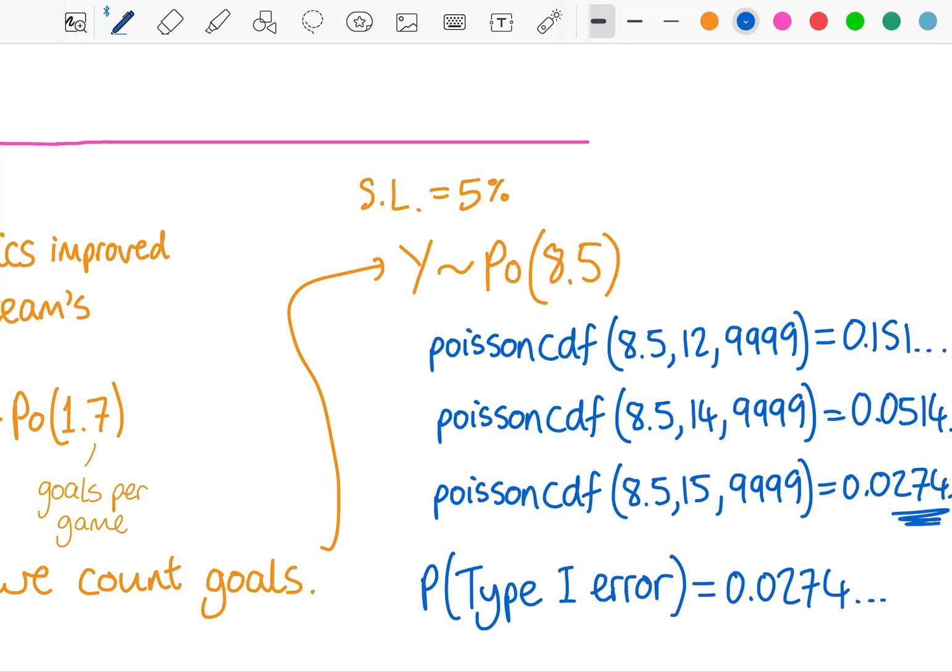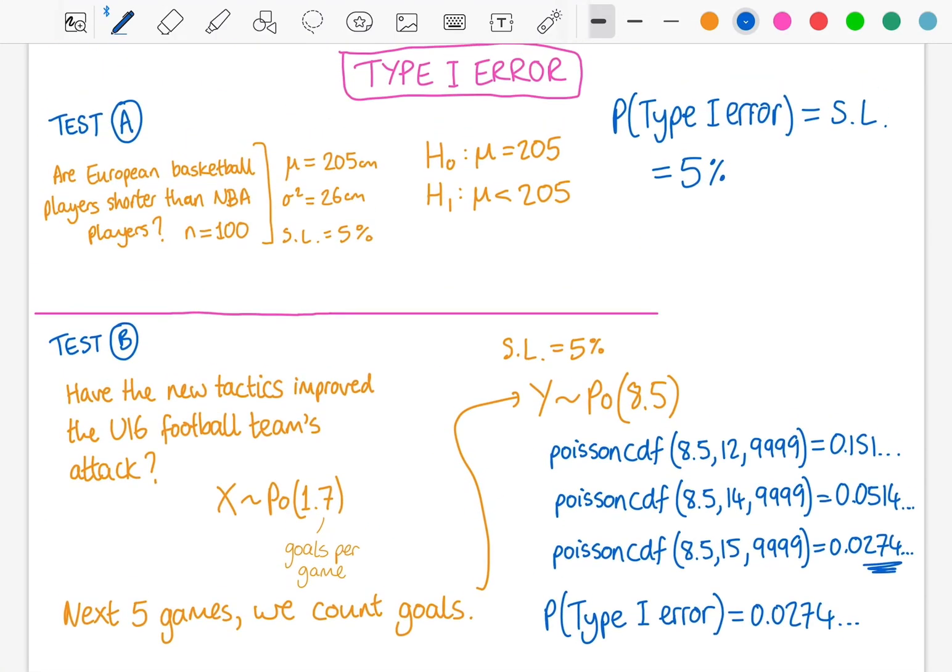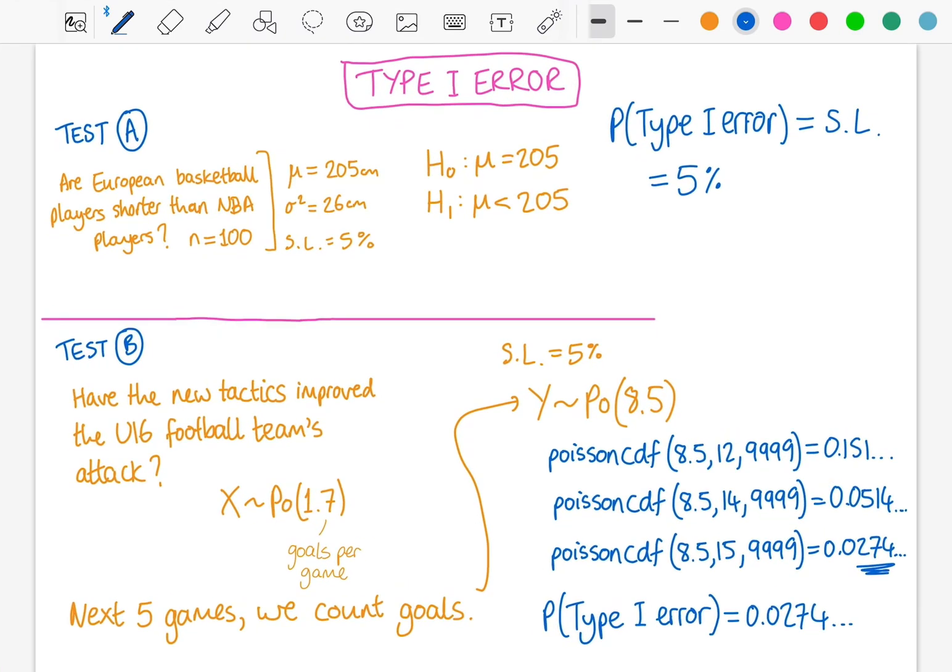And therefore, that is the probability of type 1 error. And the opposite way around will be type 2 error and that will be in the next video. Thank you.